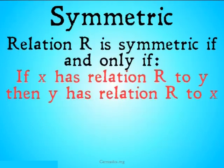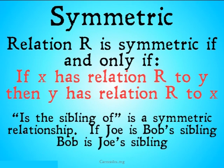The first one we're going to look at is symmetric. Relation R is symmetric if and only if: if X has relation R to Y, then Y has relation R to X. An example would be 'is the sibling of,' which is a symmetric relationship. If Joe is Bob's sibling, then Bob must be Joe's sibling. There's no way for Joe to be Bob's sibling and for Bob to not be related to Joe.